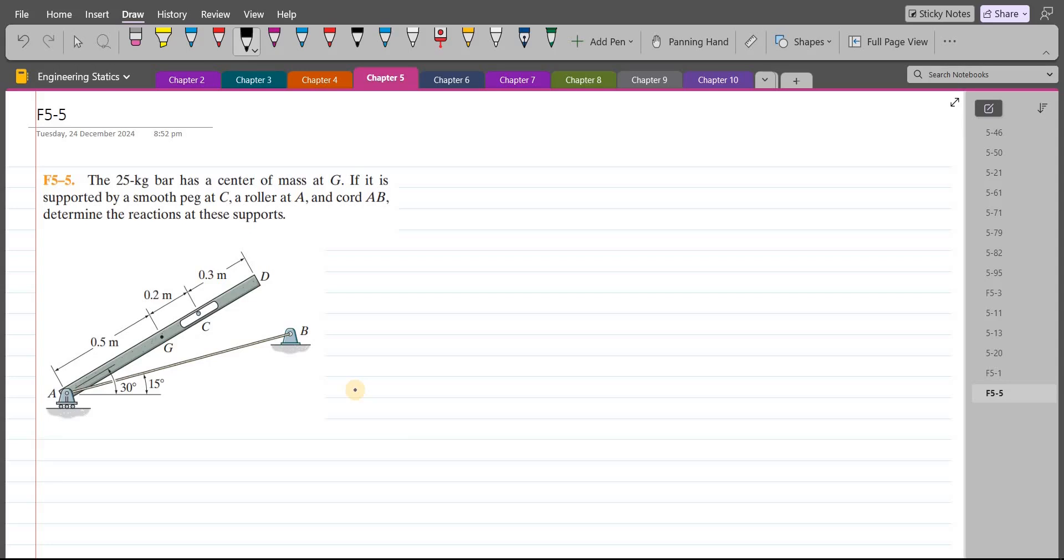Now to solve this problem, first of all, we have to draw the free body diagram. So at point A, I have a roller support, so I have a vertical support reaction. Then at point G, there is a center of mass, so I have the weight acting in a downward direction. I have a normal reaction because of this peg at C, so it is perpendicular to the segment AD. Also, I have a force due to this cable or chord AB. Let's label them.